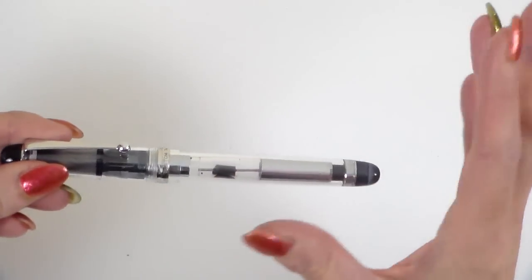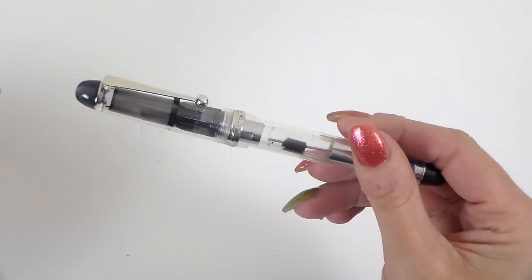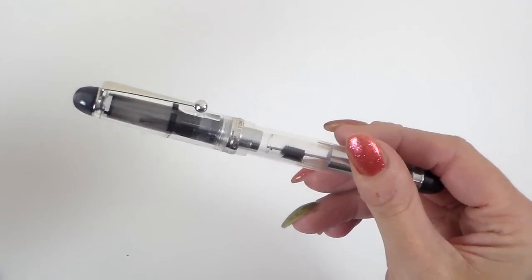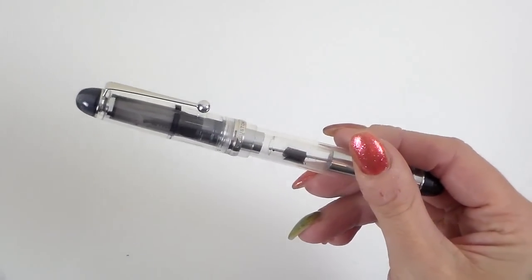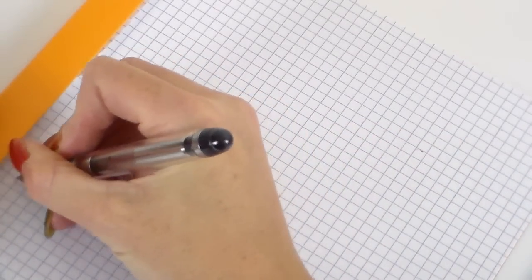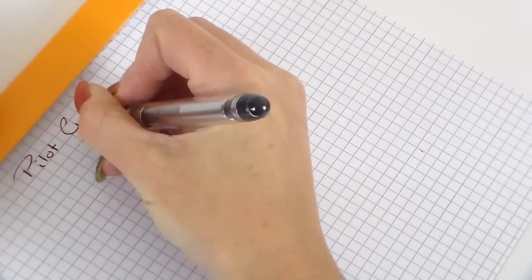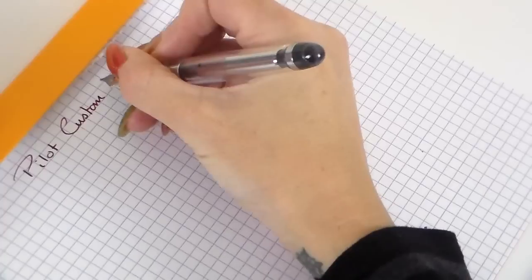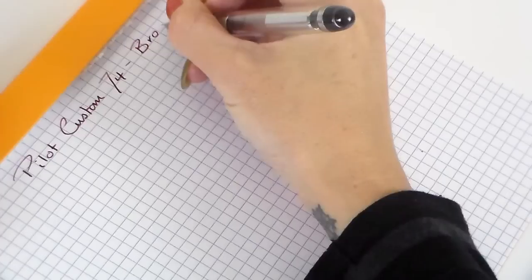So, I am going to carry on. I'm going to do a writing sample now for you. And then I'll show you how this writes with a broad nib. Because if you do like wet, broad nibs, this is perfect. So, come and see me in a sec. Let's look at a writing sample then. So, this is the Pilot Custom 74. And this has a broad nib.